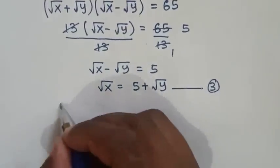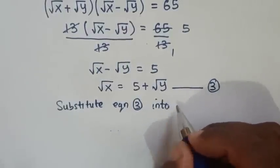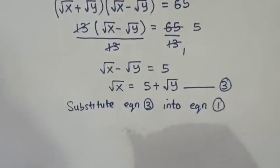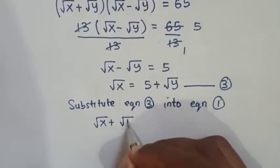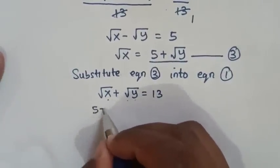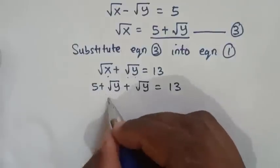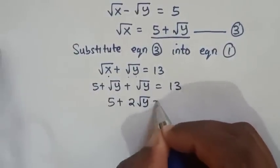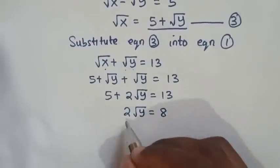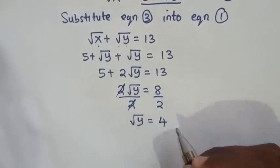In the next step, we substitute equation 3 into equation 1. Equation 1 is √x plus √y equals 13. We substitute the value of √x, which is 5 plus √y, into equation 1. So it becomes 5 plus √y plus √y equals 13, which simplifies to 5 plus 2√y equals 13.